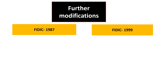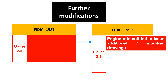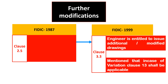Further modifications have been made in the 1999 version. First, the engineer is now entitled to issue additional or modified drawings, which was not provided in the 1987 Clause 2.5. Second, it has been categorically mentioned that in case of a variation, Clause 13 — the variation clause — shall be applicable. These are the key changes introduced in the 1999 version.